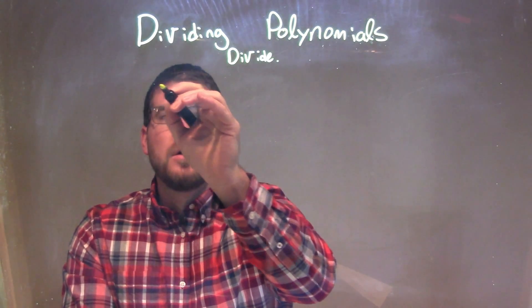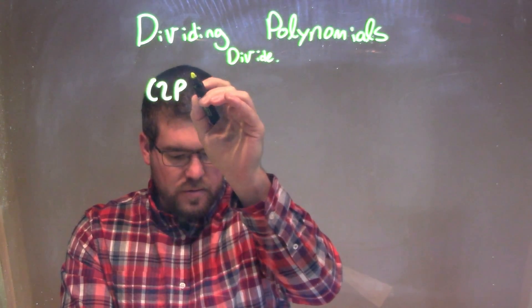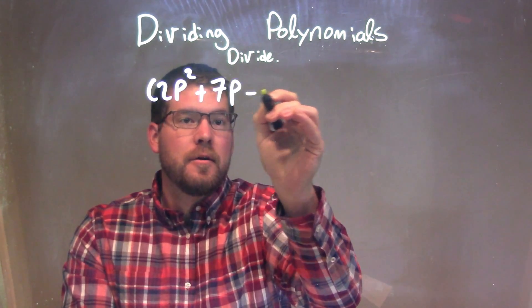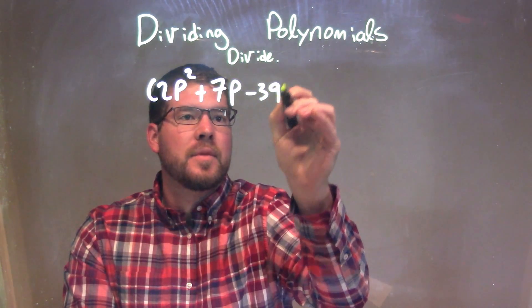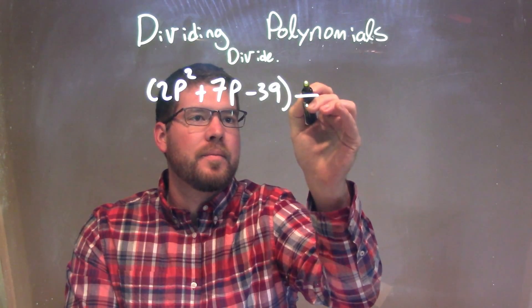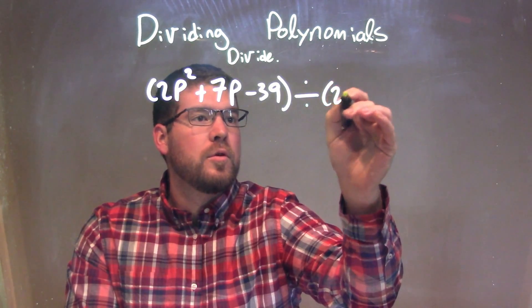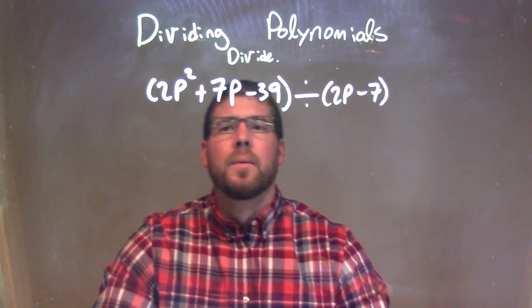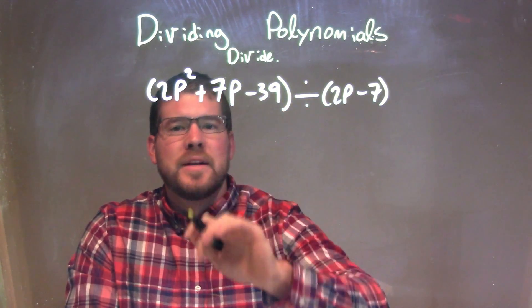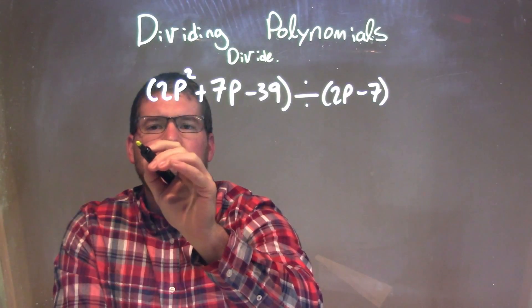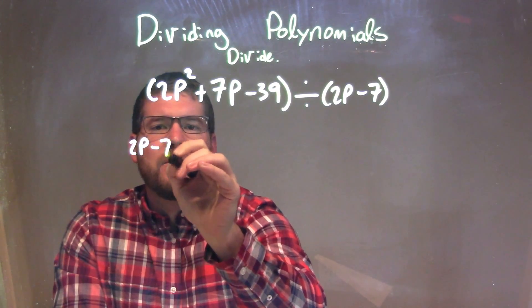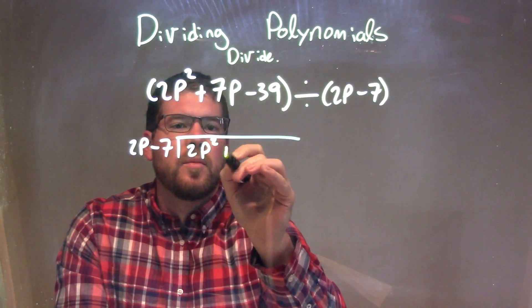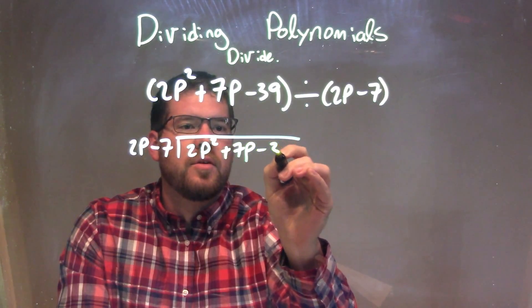So if I was given this problem, 2p squared plus 7p minus 39 divided by 2p minus 7. Well, what I'm going to do is I have my divisor, my dividend. I'll write this as long division, so I have 2p minus 7, my divisor, into my dividend, 2p squared plus 7p minus 39.